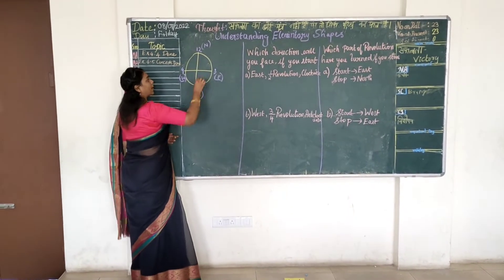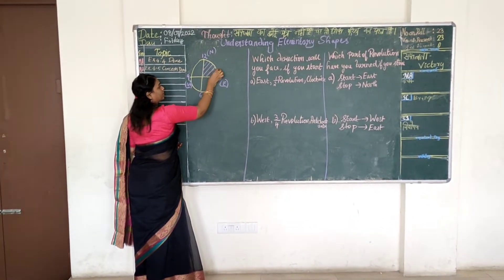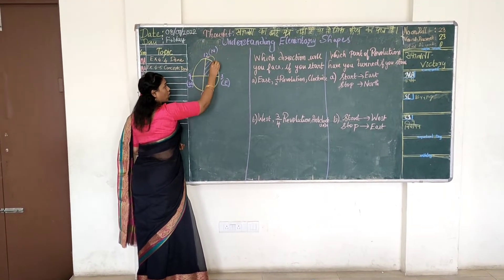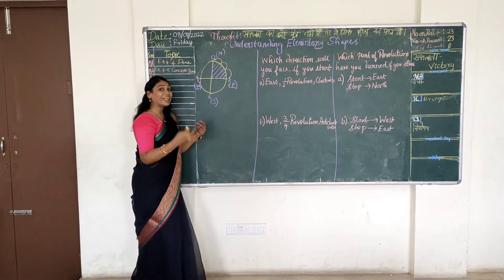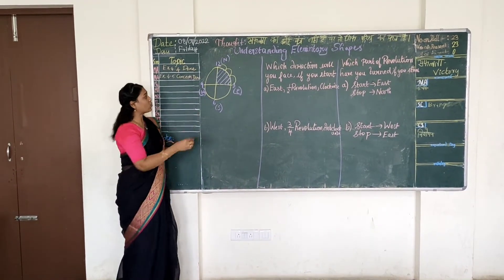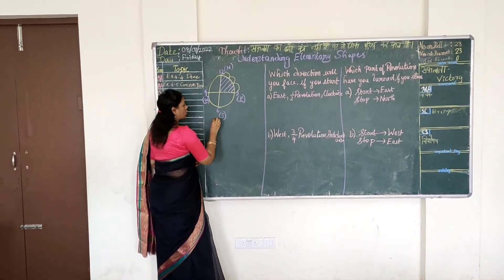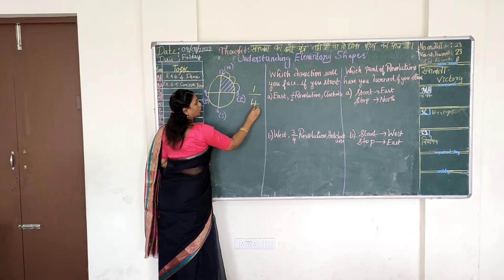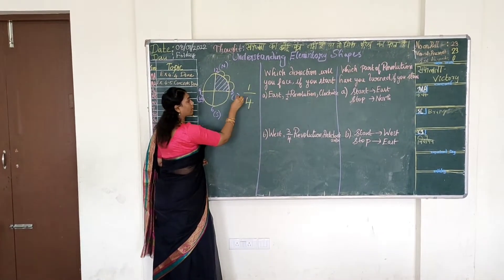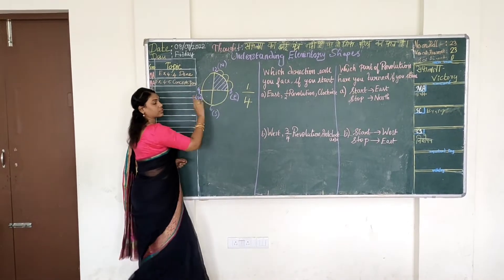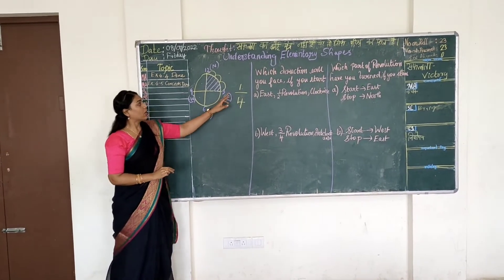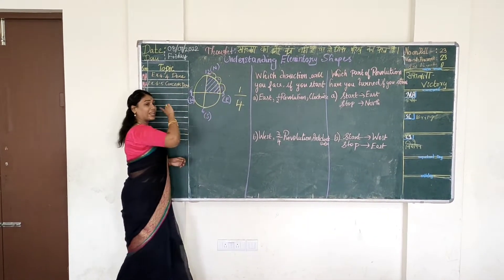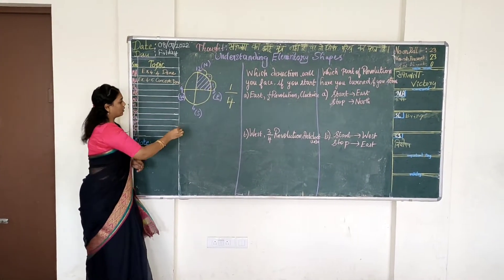If only one part of the circle is shaded, we move from 12 to 1, 2, 3 o'clock — 3 times. The fraction is number of shaded parts divided by total number of parts: 1 by 4. So a 1/4 revolution means 3 turns.